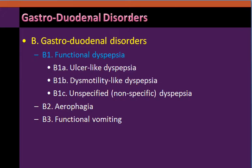Among the gastroduodenal disorders, which are listed under B: B1 functional dyspepsia, ulcer-like dyspepsia, dysmotility-like dyspepsia, and unspecified dyspepsia. These will be dealt with in our present presentation.